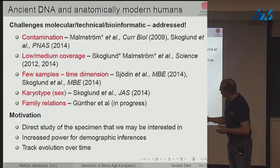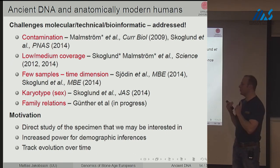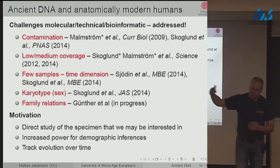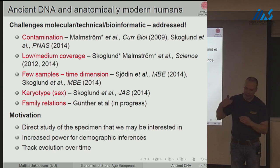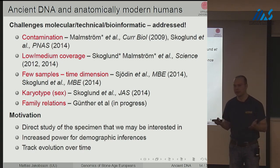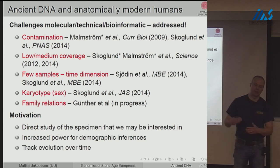When you want to track evolution over time, you normally do that in bacteria or yeast where you can follow generations forward in time. But when you have access to DNA from historical samples, you can do this for humans. We can consider it a time capsule — the ability to track evolution directly in humans is something we couldn't have imagined 15–20 years ago.